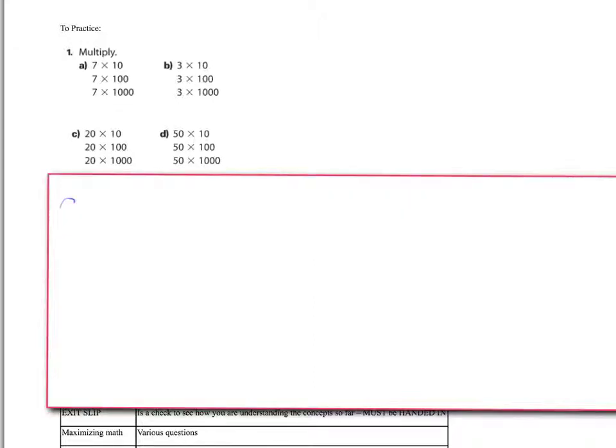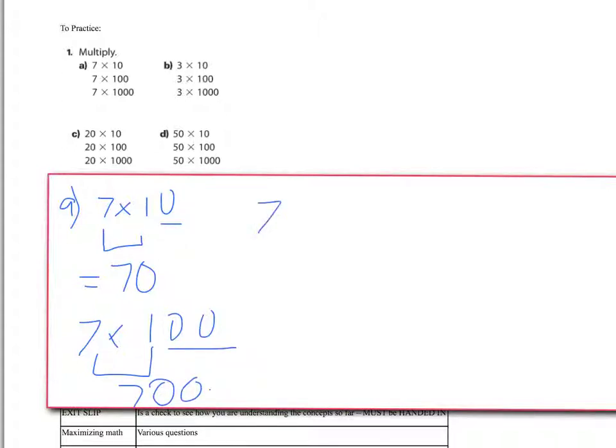All right, let's take a look for A. Well, I know 7 times 10. 7 times 1 is 7. One zero off, one zero back on. So it equals 70. 7 times 100. Well, 7 times 1 is still 7. How many zeros off? 2. I add 2 back on, 700. 7 times 1,000. 7 times 1 is 7. How many zeros did I take off? 3. How many do I put back on? 3. 7,000.